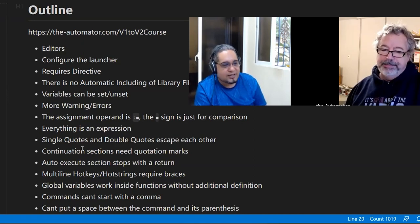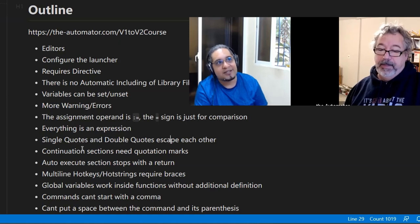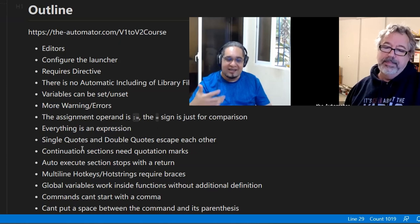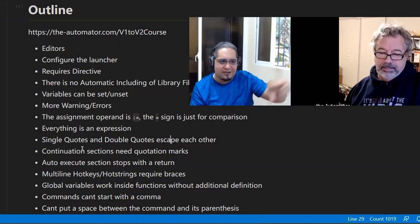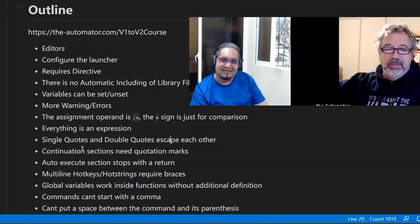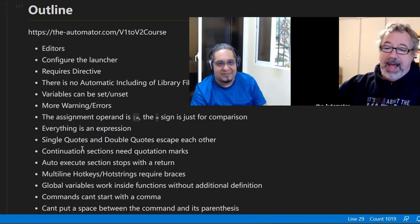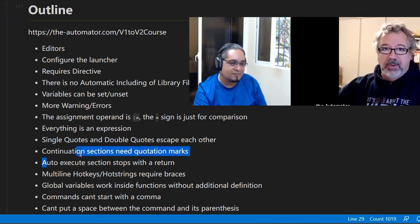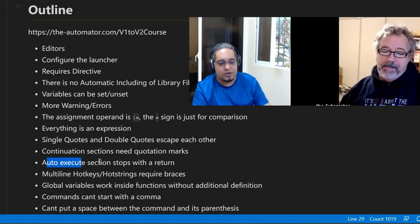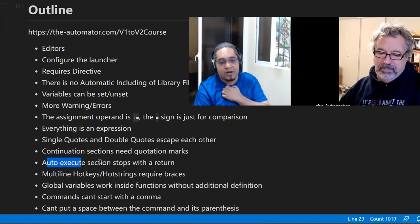We're gonna talk about continuation sections and the auto execute section of your script. The auto execute section is really important to understand — and the good news is it's better in V2. Even today when we were talking to Hellbent, he was asking about whether hotkeys placed there would cause issues, and when I said no, he was like, 'oh my god, that's good.' For complete noobs, V2 raises the bar a little bit higher compared to V1. However, the fact that the auto execute section for the most part goes away makes it much simpler, and that will help people learn faster — especially when you're merging scripts or including other scripts. In V2, that is not gonna be an issue.